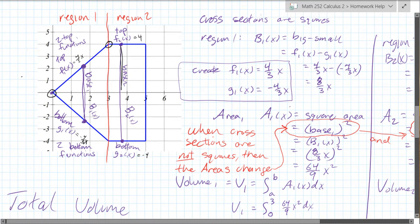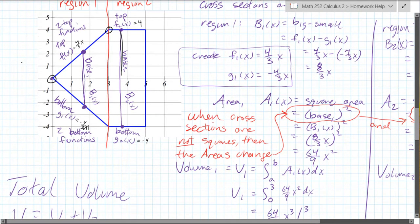So we got our area one is the square of the base, and that's all computed right here, and then reduced into 64 over nine x squared.